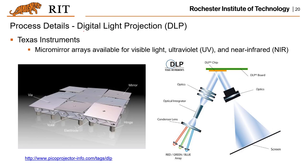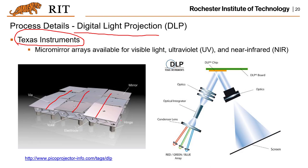An important component for the digital light projection-based method is the DLP chip, developed by Texas Instruments. It consists of arrays of micro-mirrors whose tilt angle and visibility can be controlled. When light is projected onto these mirrors, by controlling their visibility and tilt angle, a 2D image with black-and-white regions and varying darkness levels is generated on a plane, allowing precise control of curing on that 2D plane.